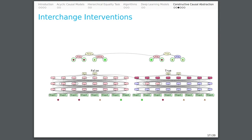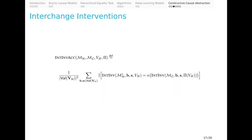A deep learning model implementing an algorithm is simply a matter of having counterfactual behavior for interchange interventions with any base and source inputs being the same. The interchange intervention accuracy is the proportion of aligned interchange interventions on which the high-level algorithm and low-level neural network have the same behavior.